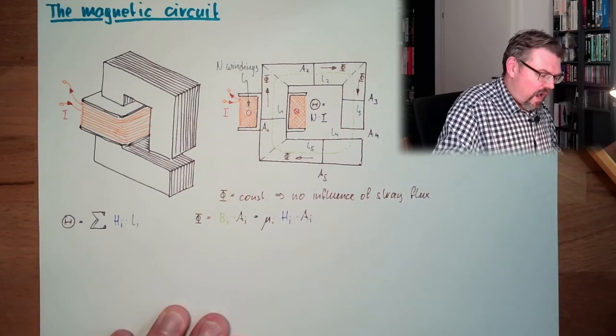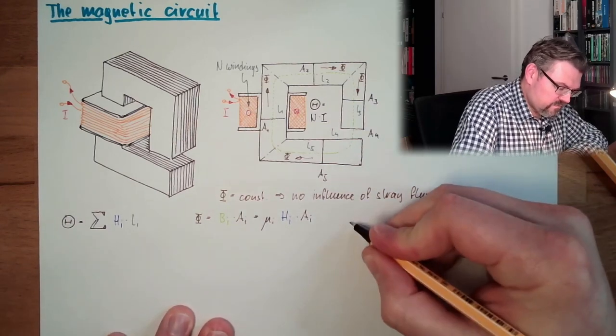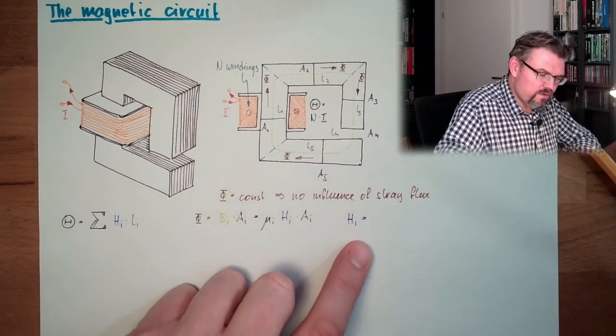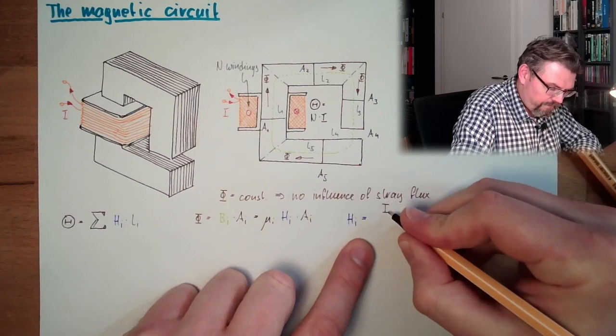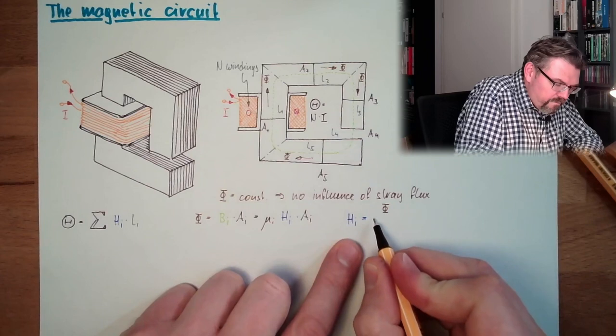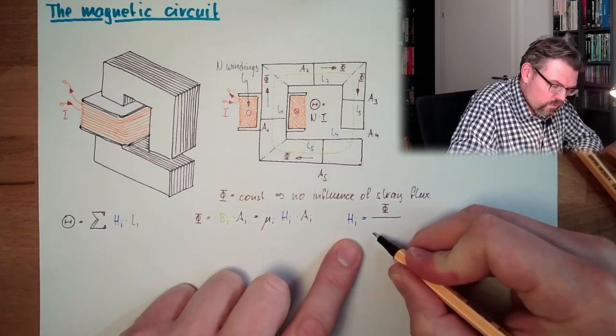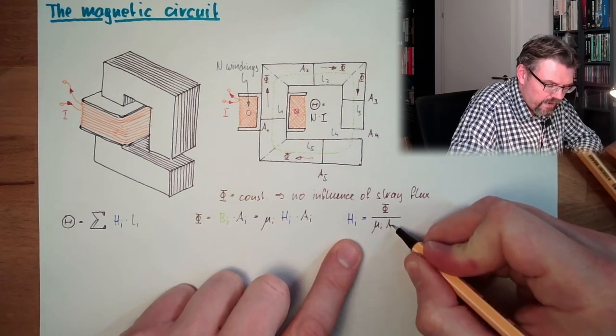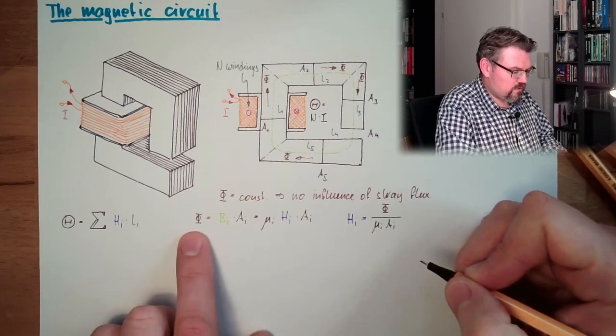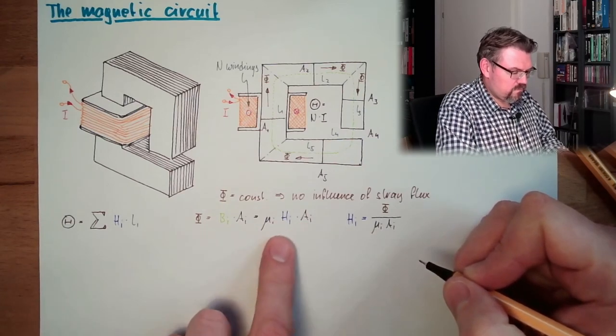So our Hi equals phi divided by mu i, Ai. This is just resolved.